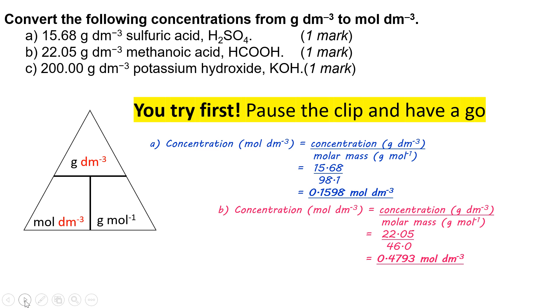Doing exactly the same thing for B, 22.05 over 46 this time for methanoic acid, gives you 0.4793.